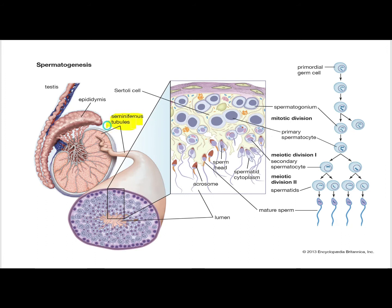Sperm production starts in the seminiferous tubules of the testes. Here, primordial germ cells undergo differentiation to form spermatogonium, which undergoes mitosis to form primary spermatocytes. Primary spermatocytes undergo meiotic division one to form secondary spermatocytes, which further undergo meiotic division two to form spermatids.